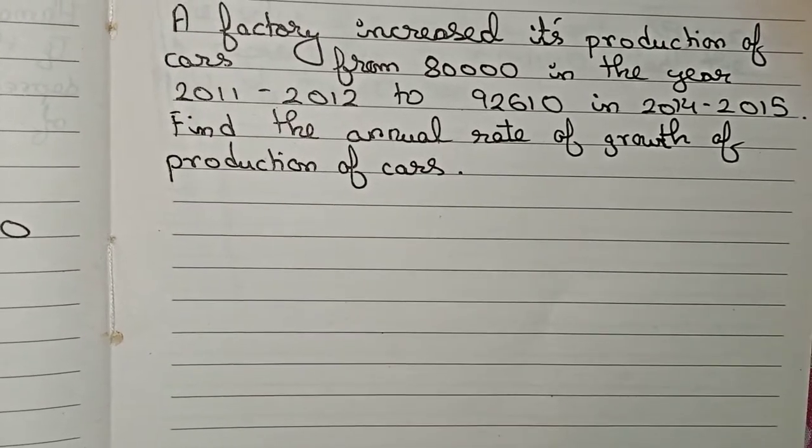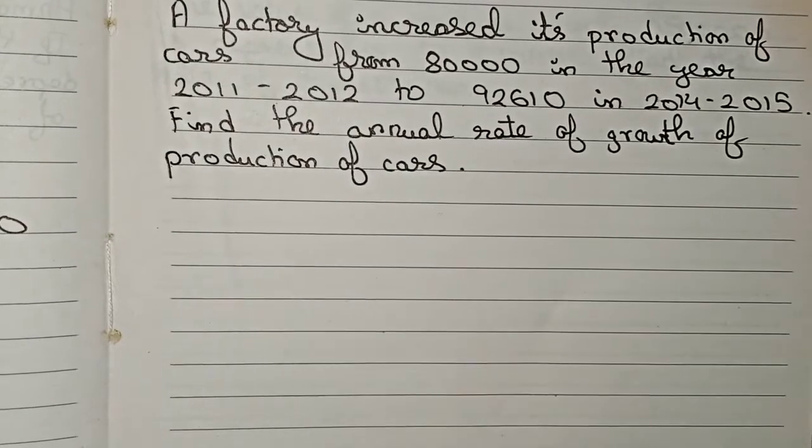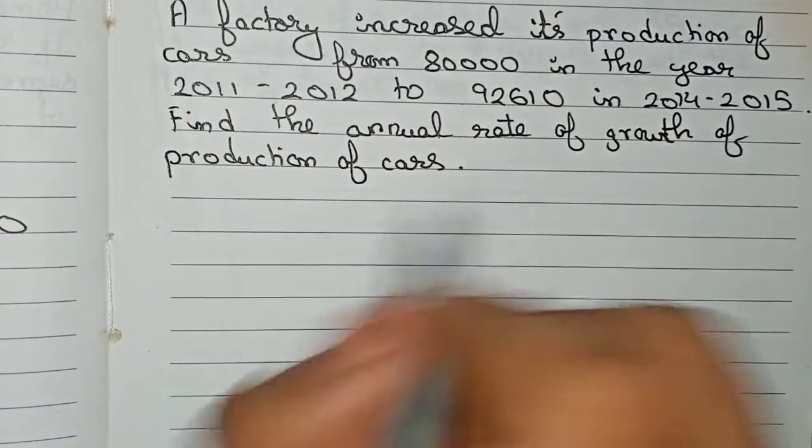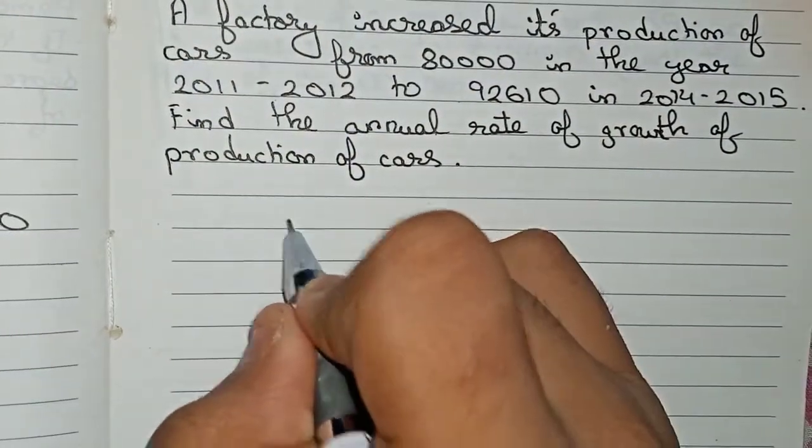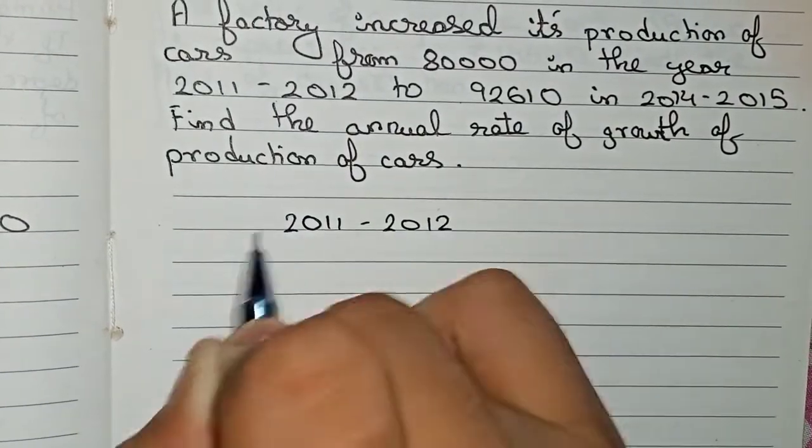So this is the question already. Annual rate of growth means we have to find out the rate of interest. So first we can say that from 2011 to 2012, in this case the production of cars is 80,000.